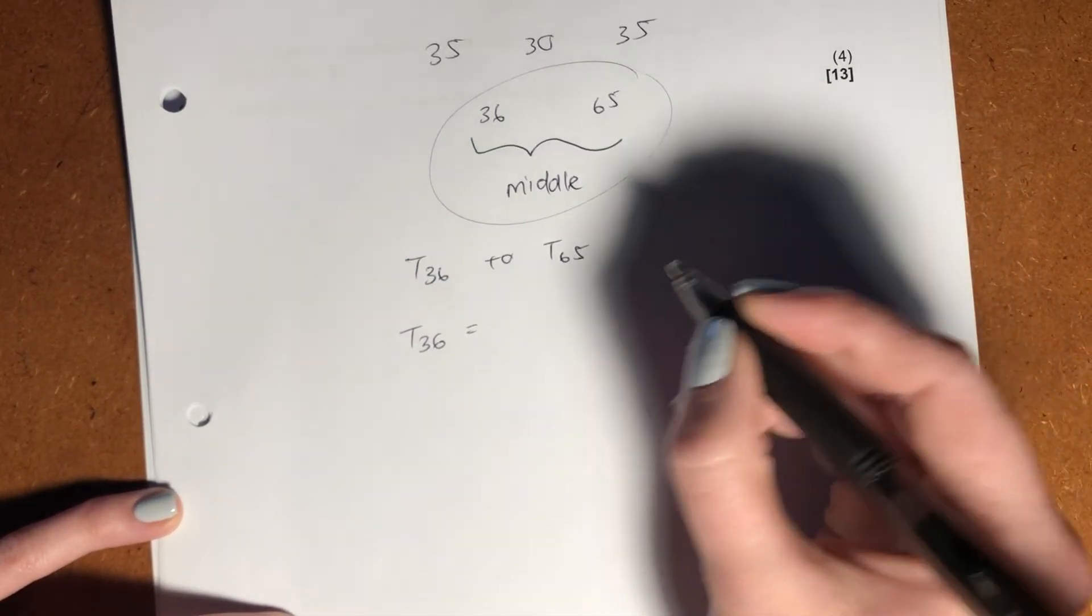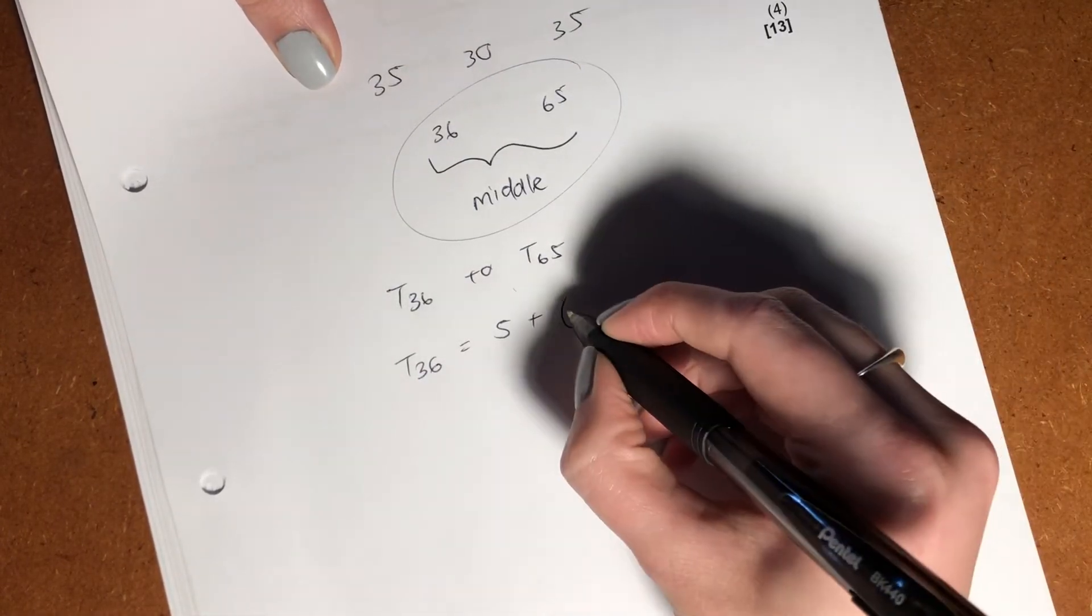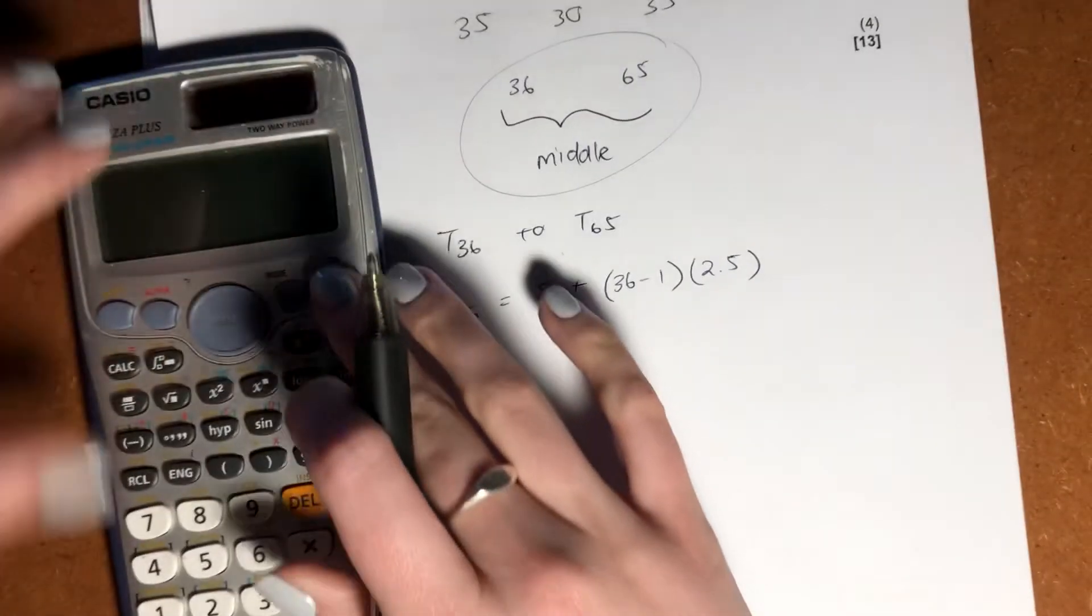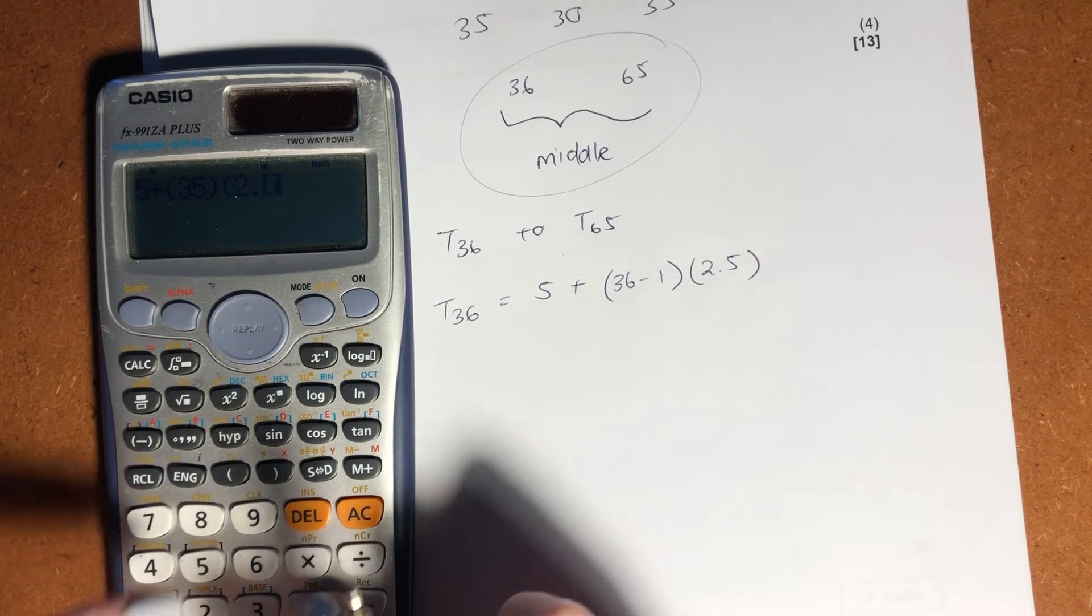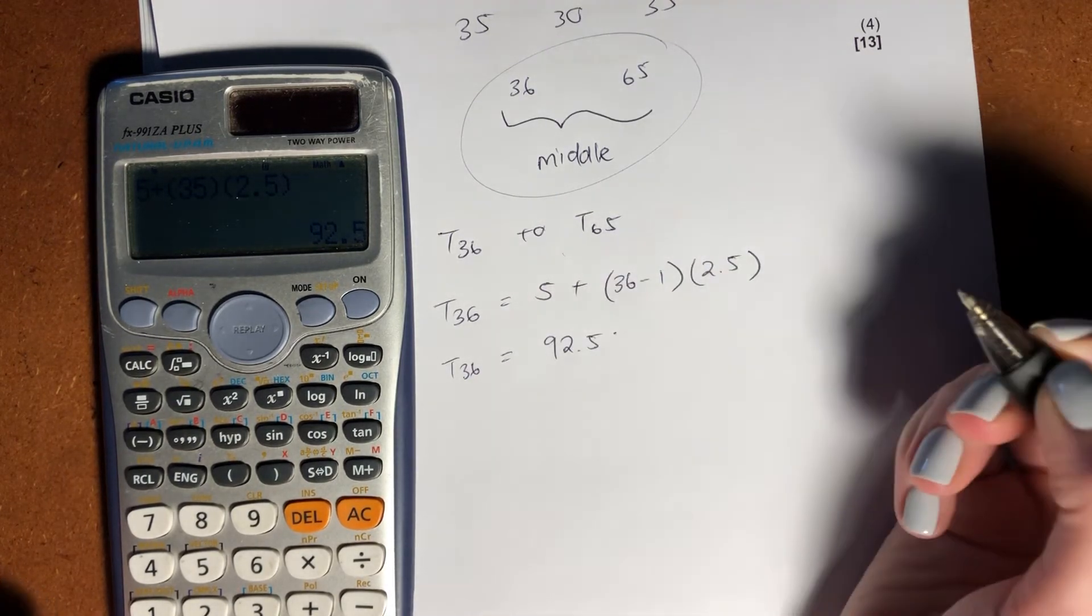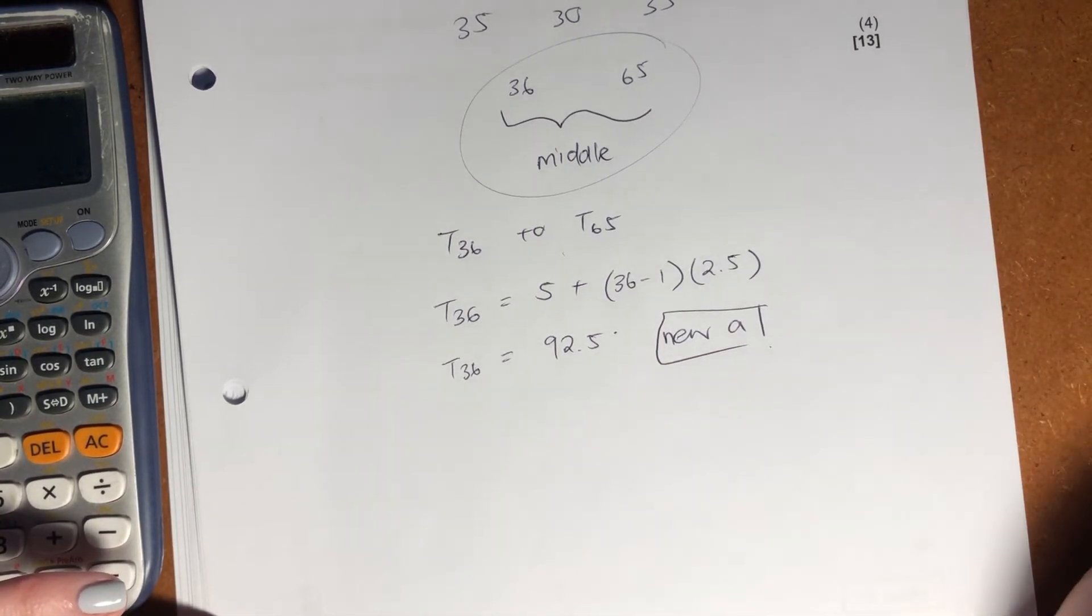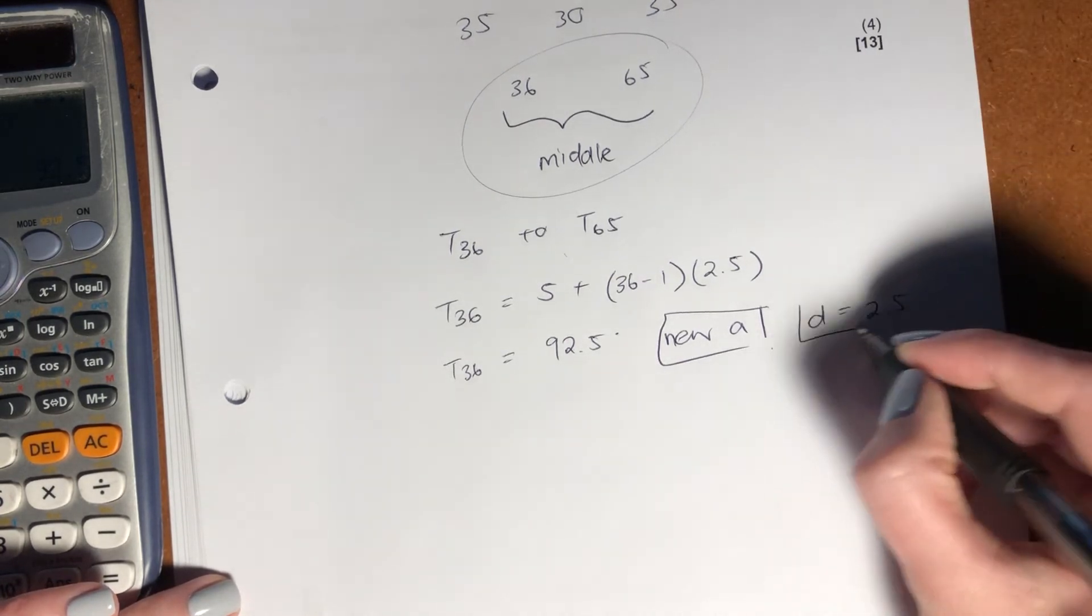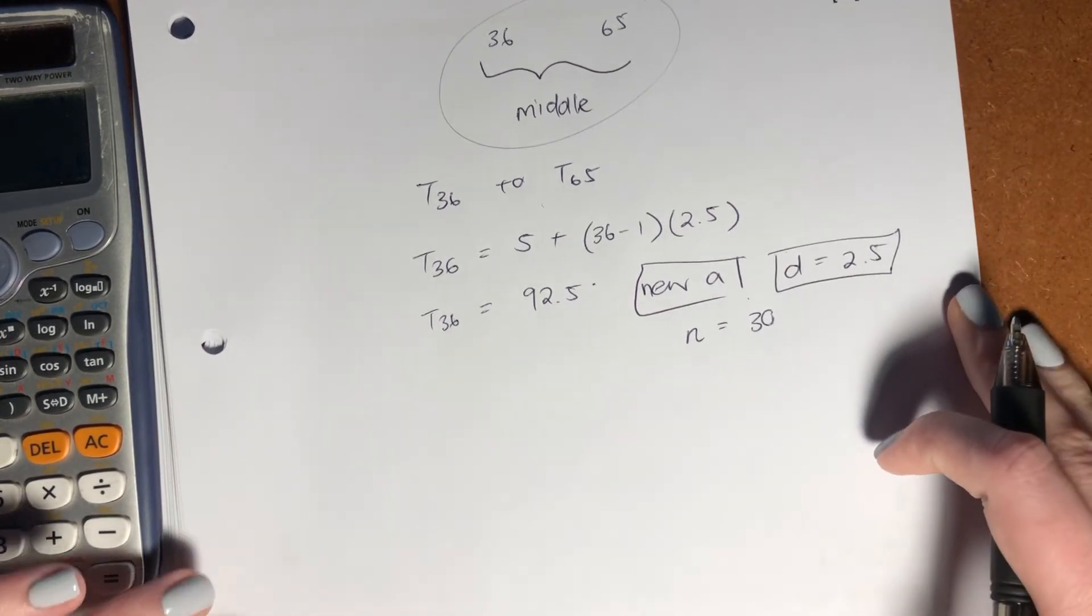Let's go work out what T36 is. What was our A value? Our A value is 5 plus N minus 1, which is 36 minus 1. And what is my D value? We said it was 2.5. Let's put this into our calculator. 5 plus 35, that's 36 minus 1 times 2.5. So we have that T36 equals 92.5. And effectively, this is our new A value because this is the new series that we're summing across. So we know that that's our A value. Our D value still remains the same at 2.5 because it's still going up. And we know that our N value in this case is going to be 30 because there are 30 terms in the sequence.